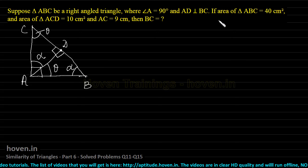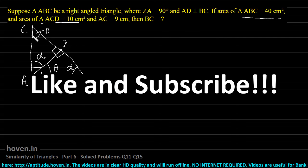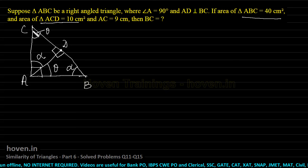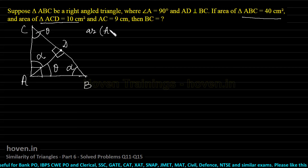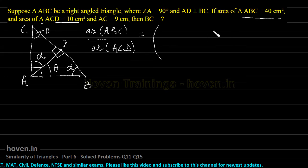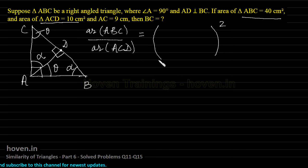The next part of the question states: if area of triangle ABC is 40 and area of triangle ACD is 10. ABC is the bigger triangle and ACD is the upper smaller triangle. We can write the ratio of area of ABC to area of ACD. By the area theorem of similarity, the ratio of areas of two similar triangles equals the square of the ratio of any corresponding sides. Let us list the corresponding sides for ABC and ACD.